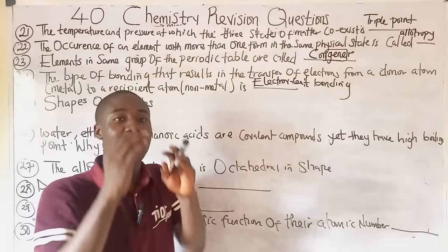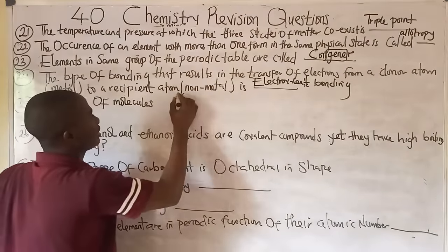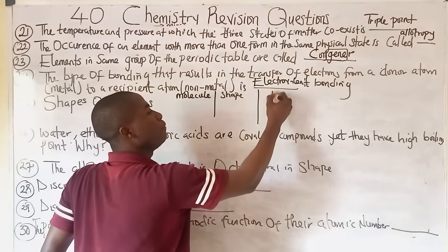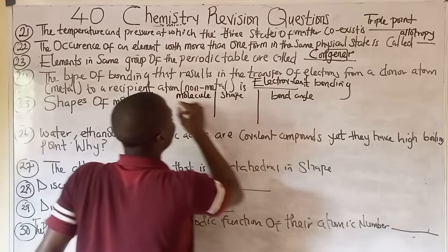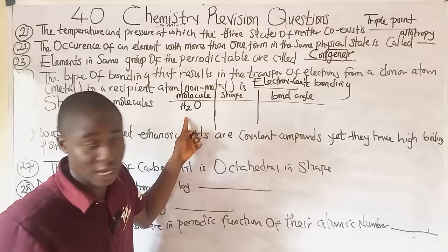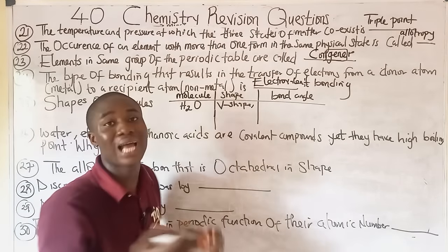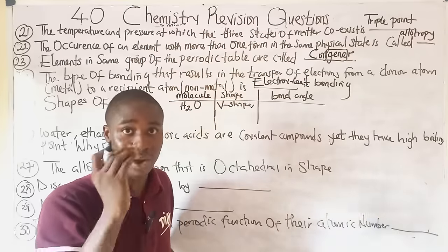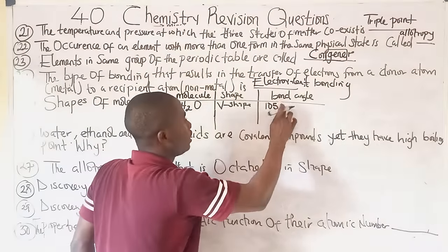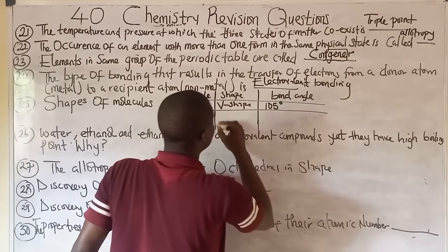Question twenty-five covers molecular shapes and bond angles. For water (H₂O): it has a V-shape (angular or bent shape) with a bond angle of 105°. For CO₂ and Cl₂: these have a linear shape with a bond angle of 180°.